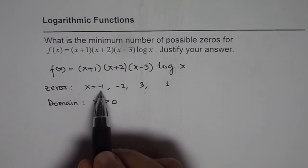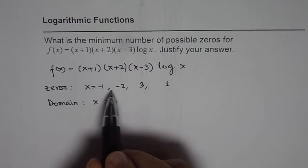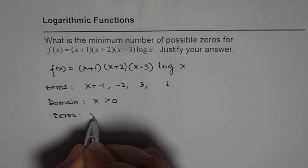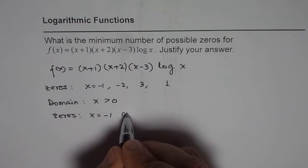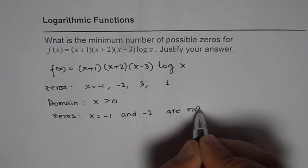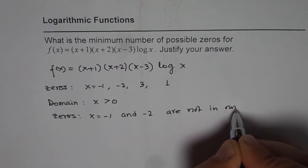The first two zeros which are at x = -1 and x = -2 are not in our domain, right? So we have zeros at x = -1 and at x = -2, they are not in our domain.